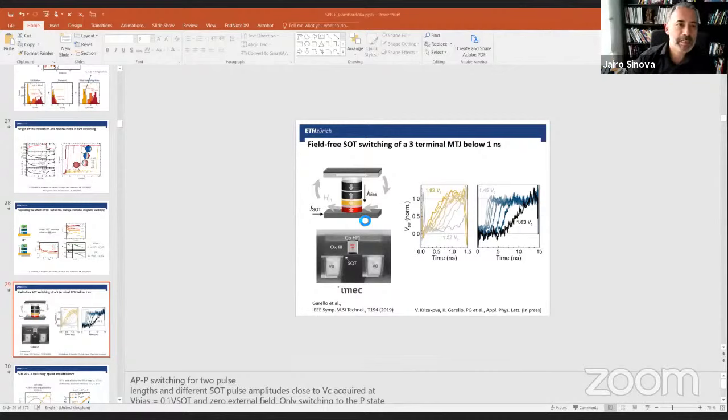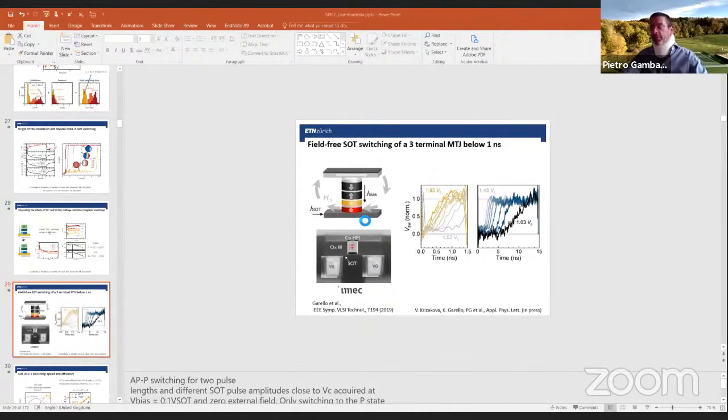And one last question, I think, from Matthias, that he had to leave, but it left me here in a text. In the switching speed and the spin-orbit torque switching is limited by the domain wall motion. He was wondering if one could scale down the structures to have single-domain elements, and how would that affect the switching times and the incubation times, particularly? Yeah, that's a very interesting point. It's something that we would certainly like to see. But so far, in all the devices that we have studied, we don't have evidence for coherent switching or single-domain switching.